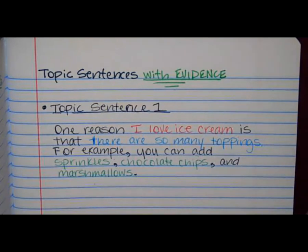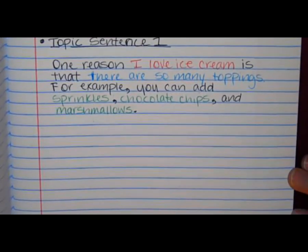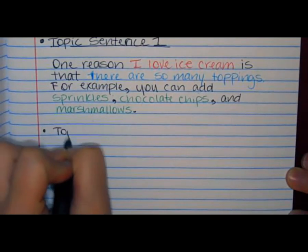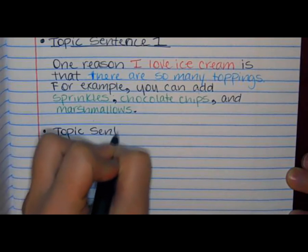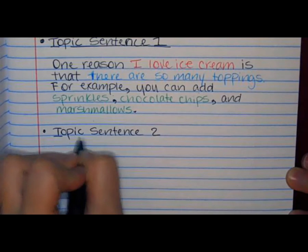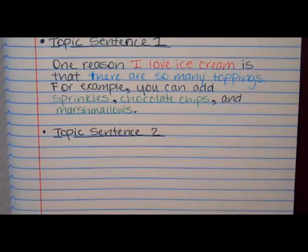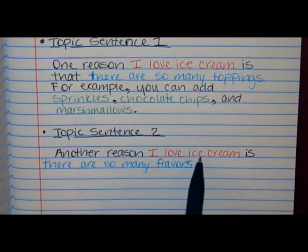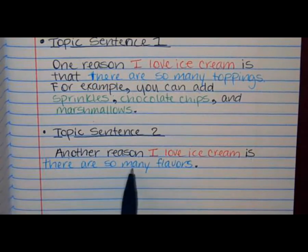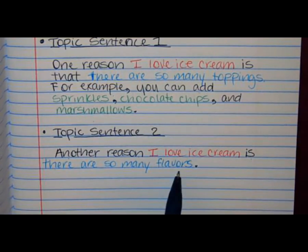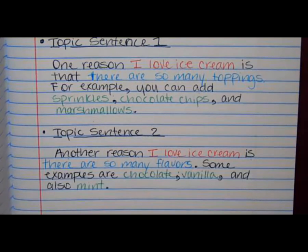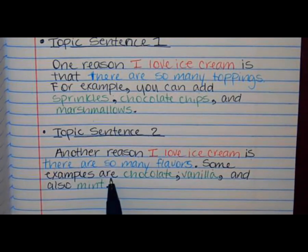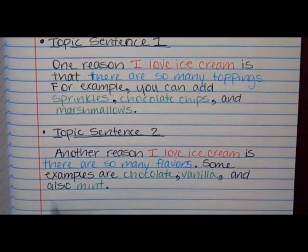Now we're going to write our second topic sentence, which will begin our second body paragraph talking about the many different flavors of ice cream. We start our paragraph with a transition phrase — 'another reason' — and then our claim: 'I love ice cream is,' and then our reason: 'there are so many flavors.' We follow this with listing examples of the different kinds of flavors. The transition phrase 'some examples are,' then evidence: chocolate, vanilla, and also mint.